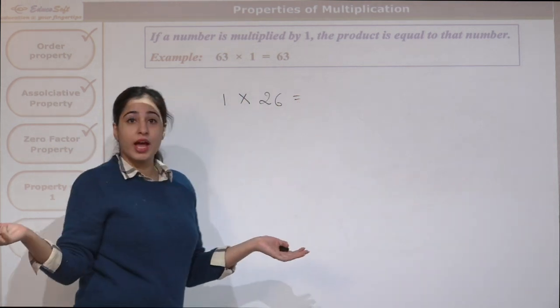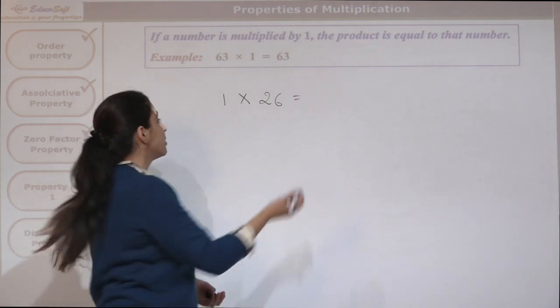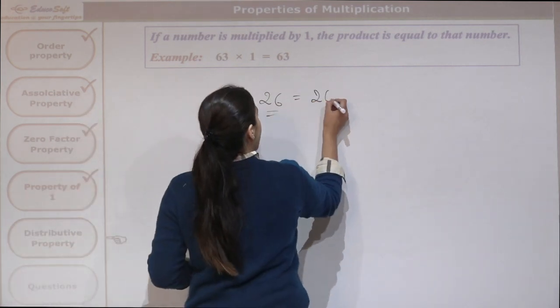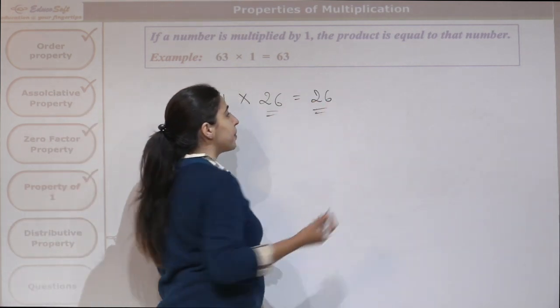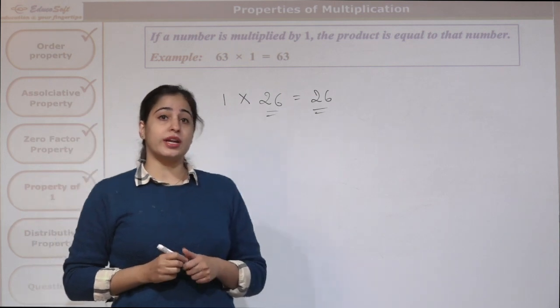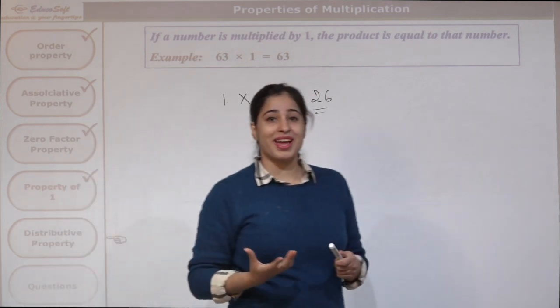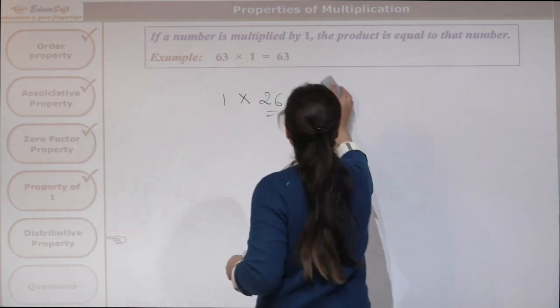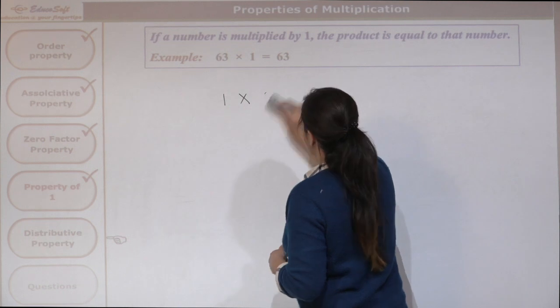Suppose I write 1 first and then 26. Then the product is the same as this number — it is equal to that number with which we multiply 1. This is the property of 1.